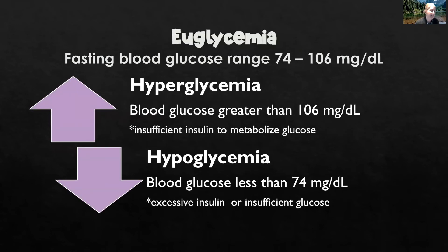Euglycemia is a fasting blood glucose range of 74 to 106 milligrams per deciliter. I do use the Iggy med-surg book, so if you're using a different med-surg book and that glucose range gets altered just a little bit in your book, just know that reference ranges do vary based on your textbook. Definitely go with whatever your textbook says, although the general range for a fasting blood glucose should be somewhere around 74 to 106 milligrams per deciliter.